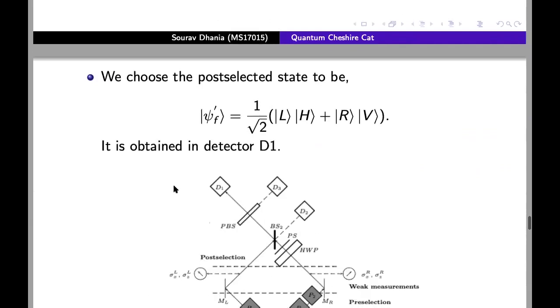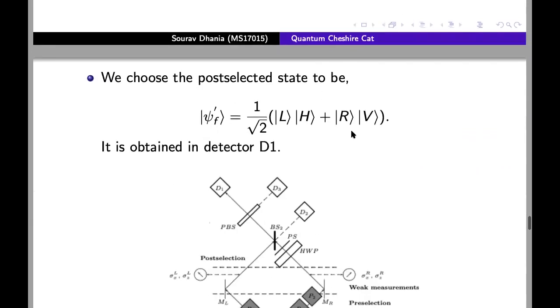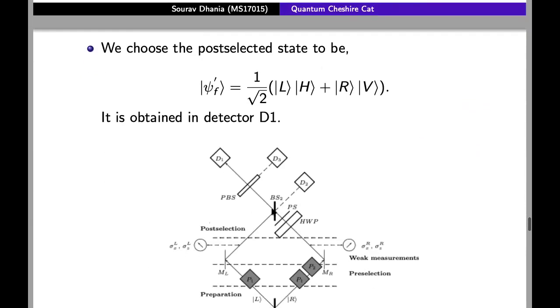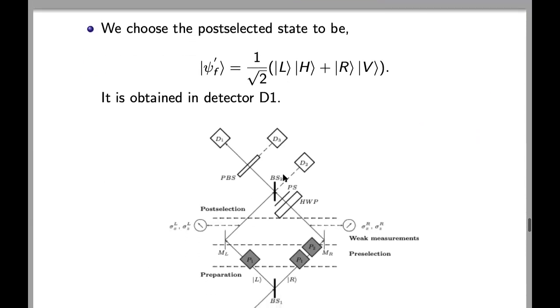We choose the post-selected state to be this and it is obtained in detector 1. So the purpose of all these arrangements, this half-wave plate and all these components, is to ensure that we obtain this state in the detector d1.